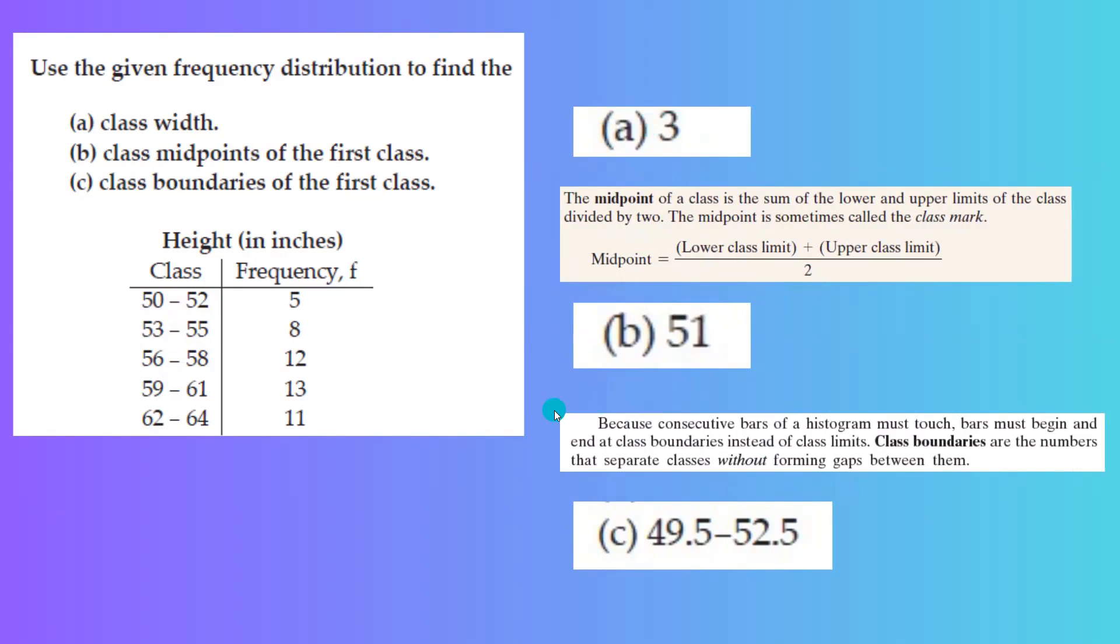And finally, the class boundaries. Remember the definition of class boundaries. Because consecutive bars of a histogram must touch, bars must begin and end at class boundaries instead of class limits. Class boundaries are the numbers that separate classes without forming gaps between them.